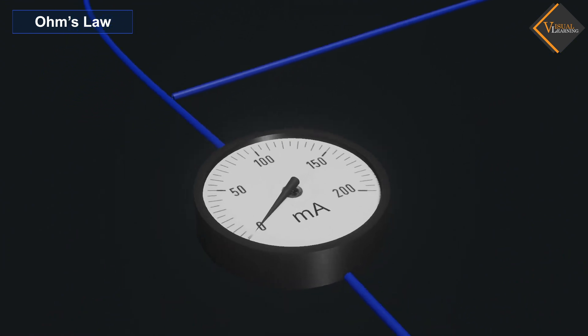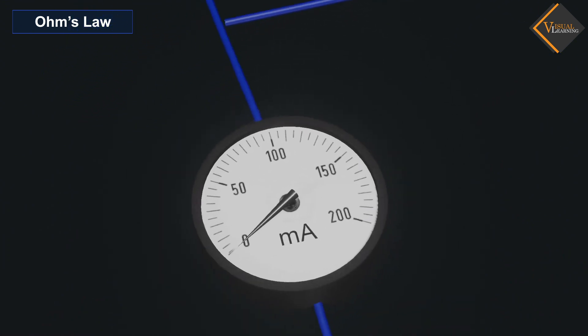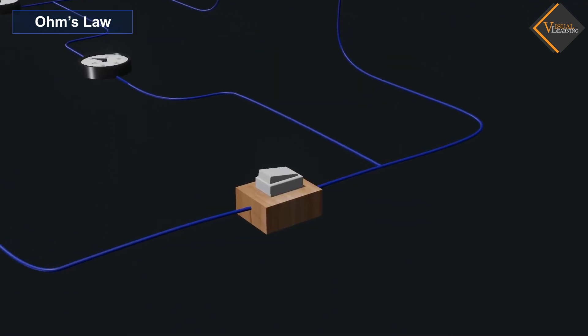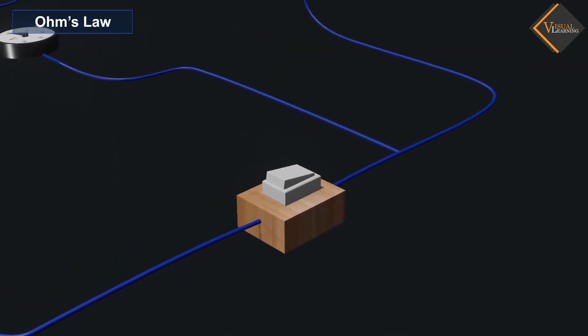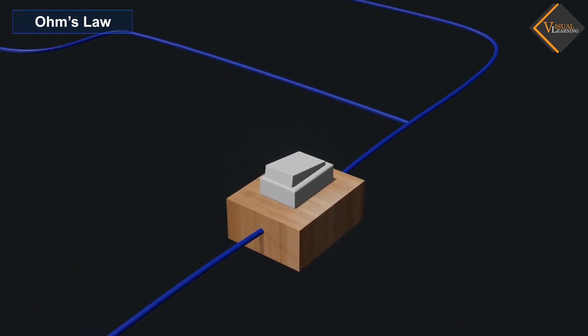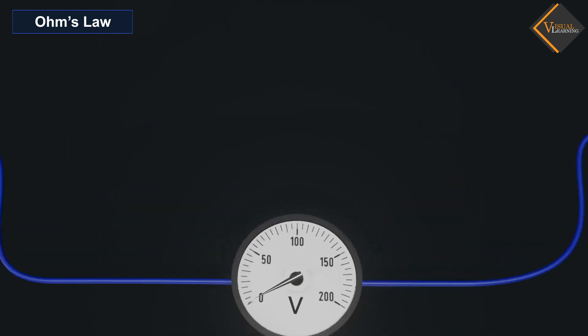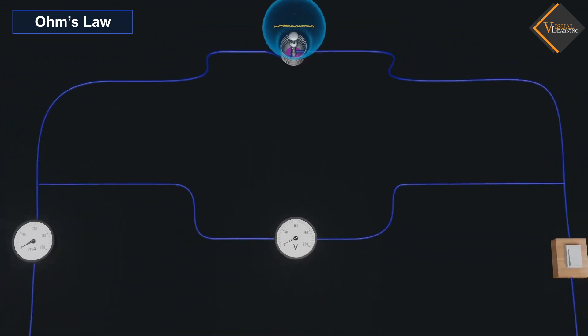An ammeter is connected in series in the circuit to measure the current. A switch is provided to the circuit to turn on and turn off the circuit. A voltmeter is also connected parallel to the circuit to measure the voltage in the circuit.